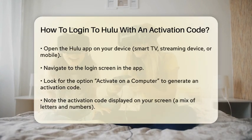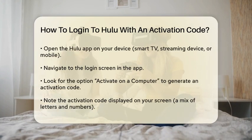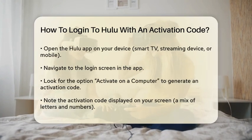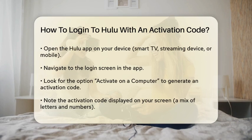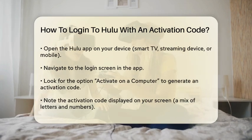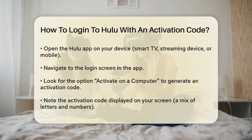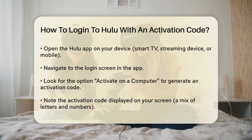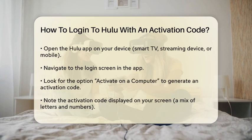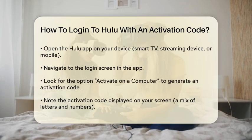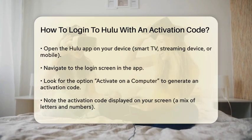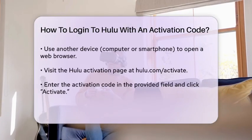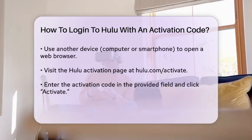To begin, open the Hulu application on your device. This could be a smart television, streaming device, or mobile phone. Once the application is open, navigate to the login screen. Here, you will typically see an option that says 'Activate on a computer' or something similar. Selecting this option will generate an activation code. Take note of the activation code displayed on your screen — it is usually a combination of letters and numbers.